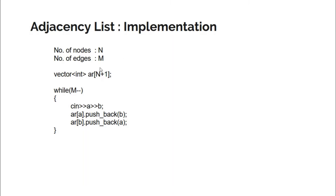Here is a simple implementation in C++. Suppose n is the number of nodes and m is the number of edges. You require a vector array of size n+1, giving indices from 1 to n. Since there are m edges, the while loop runs m times. Each iteration reads two endpoints and pushes b into the adjacency list of a, and a into the adjacency list of b. The same logic applies for ArrayList in Java. That was all for this lecture — thank you for watching and stay tuned for the next episode.